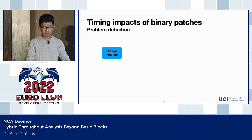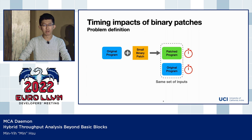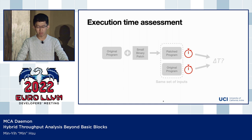More formally speaking, today we have a binary program with the patch applied. The research question goes like this: with the same set of inputs fed into both the original and the patched binary, what are the expected differences in execution time? We're primarily focusing on one key component: how can we make an assessment of the execution time of the binary?